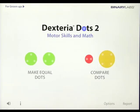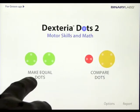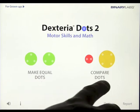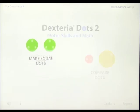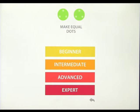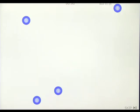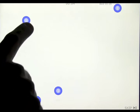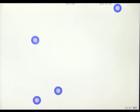So how does this work? Let's have a look. We've got two exercises: Make Equal Dots and Compare Dots. If we click on Make Equal Dots, you've got four different levels. Click on beginner. Use all the dots to make two equal dots.